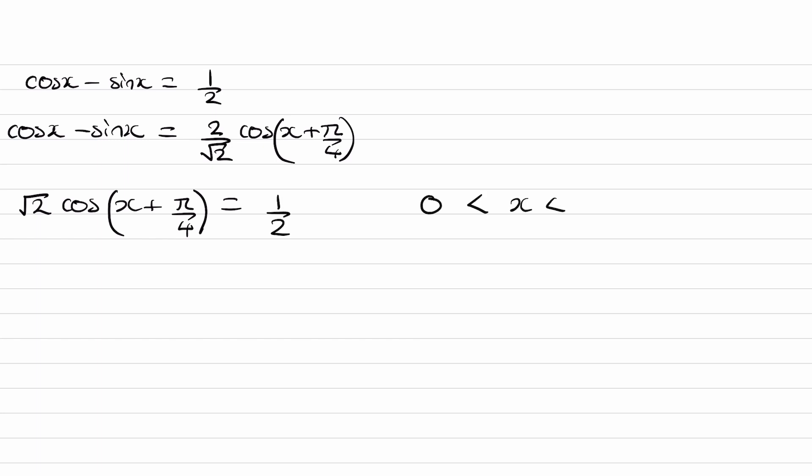x was between 0 and π over 2. Add π/4 to both of these and we end up with, so the 0 becomes π/4. This becomes x + π/4. And this becomes 3π/4. So then bring the √2 over. So divide by √2. And then inverse cos, we get 1.209.